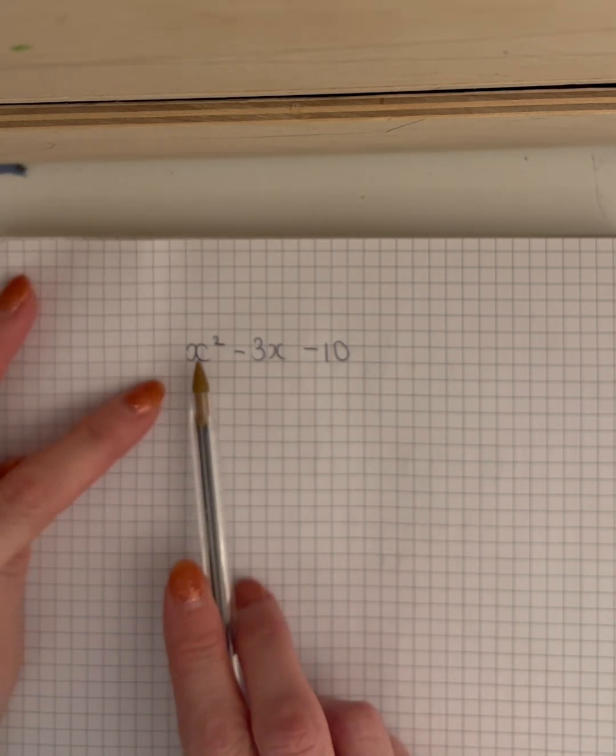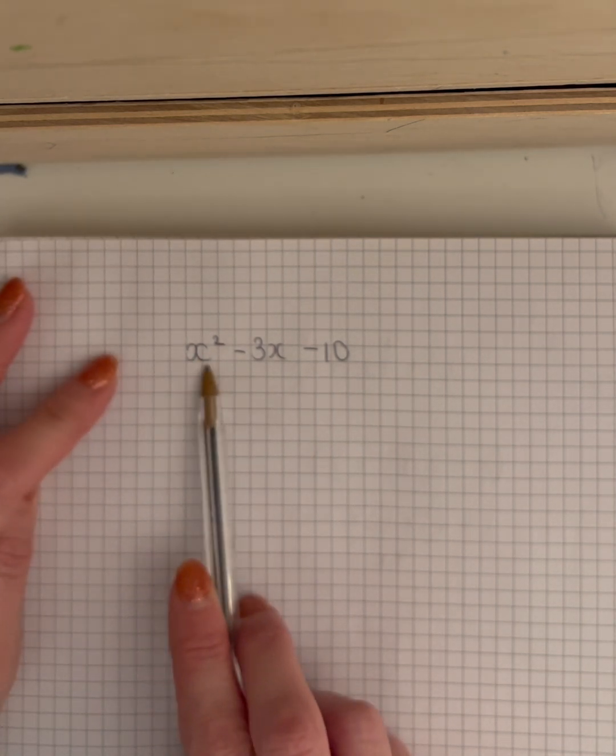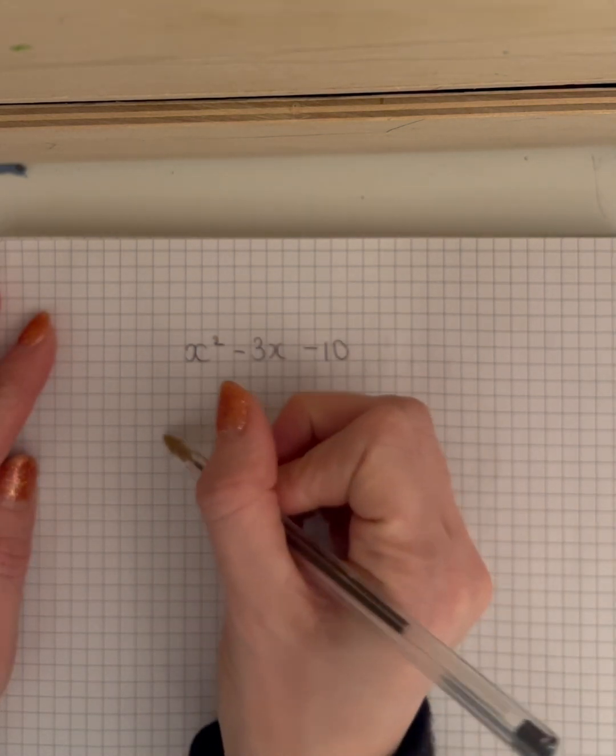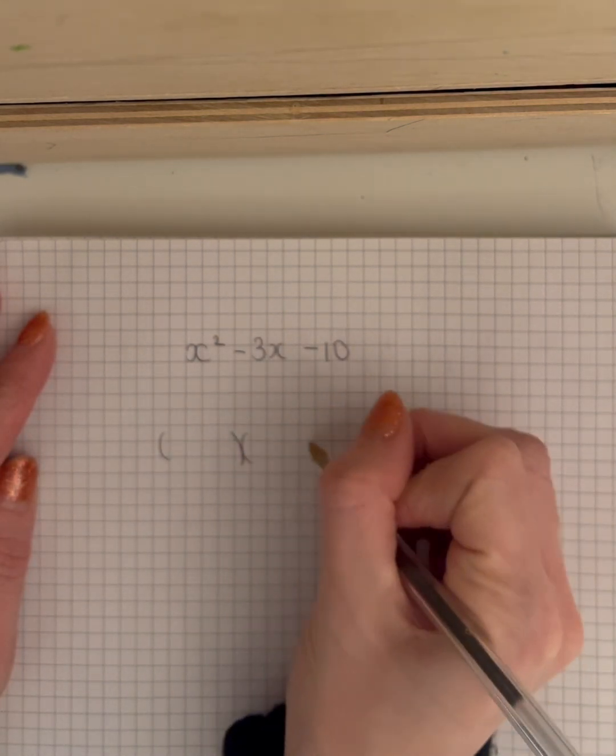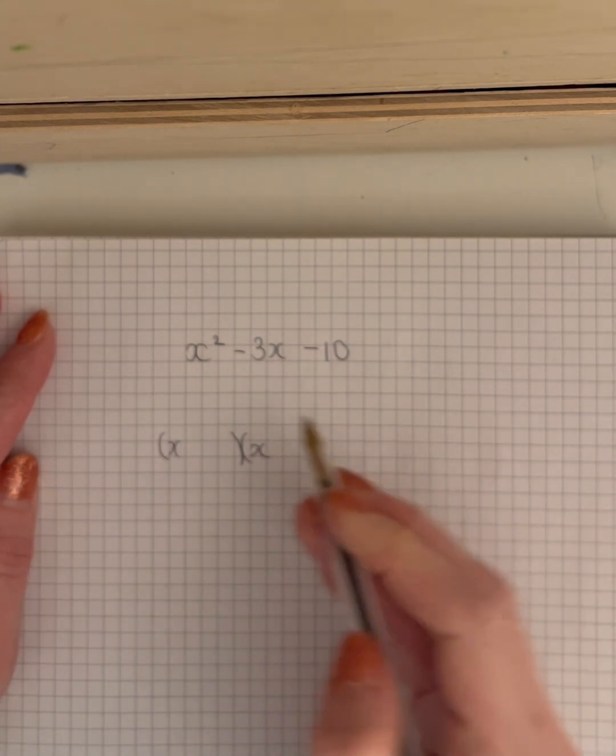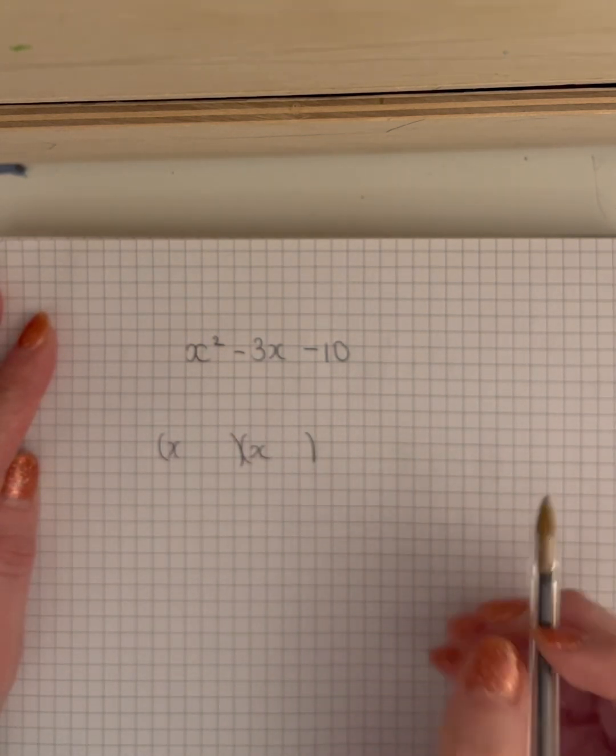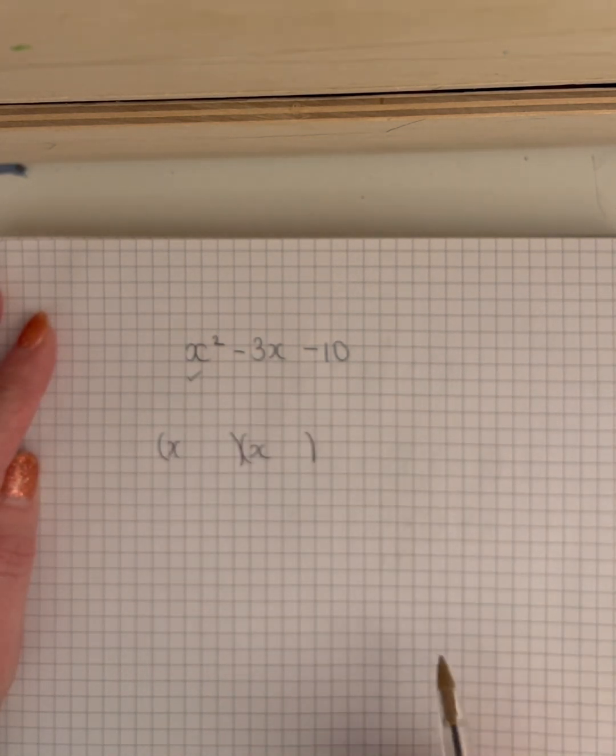So I can see straight away, I've got an x squared with no number in front, so it is going to definitely be x and x at the front. I don't have all positives, so I can't put any more signs in, but I've dealt with that one for now.